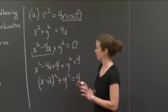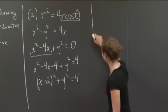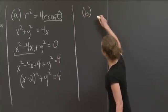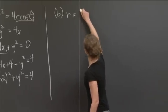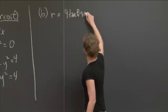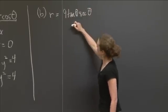OK. So now let's move on to b. And I'm going to rewrite b over here as well, so we don't have to worry about looking back. It's r = 9 tan θ sec θ.